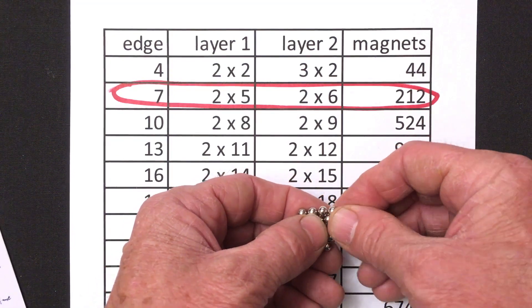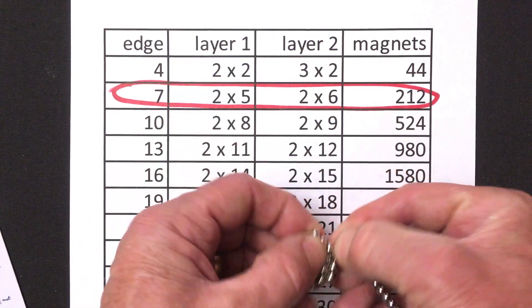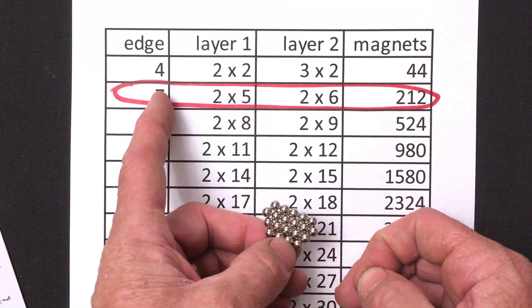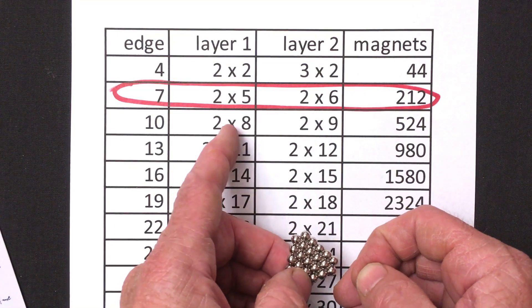Then we're going to add another ring to that forming this 3 by 3 hexagon. Then on every other side of the hexagon we'll add two magnets and this is a 2 by 5 which is exactly what we needed for edge count seven. We don't want edge count seven. We want edge count ten. We need a 2 by 8.